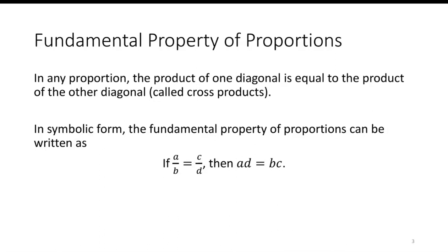In any proportion, the product of one diagonal is equal to the product of the other diagonal. We call them the cross products.